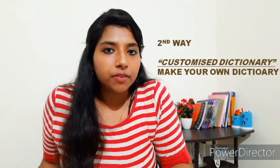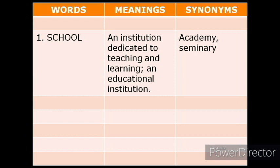That was one way to improve your range of words. The second way is making your own dictionary. Every person is different, and there were words I didn't know. So whatever word I didn't know, I started writing it in a register. I made three columns: one for words, one for meanings, and one for synonyms, which are crucial for IELTS. I really recommend you all to do this.